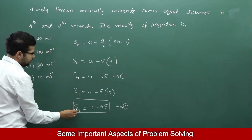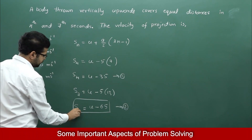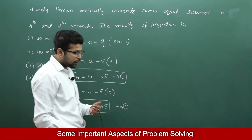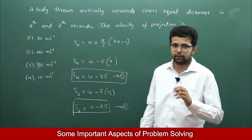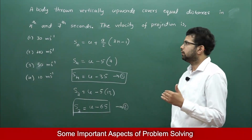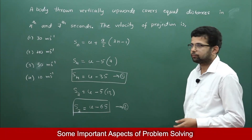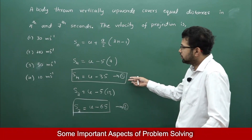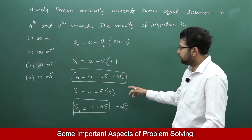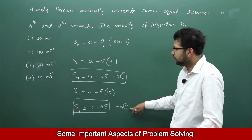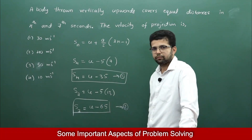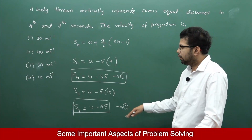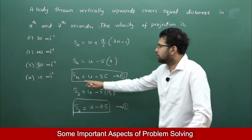Now, looking at these two equations for S4 and S7, we are given that S4 = S7 — the distance in the 4th second equals the distance in the 7th second. But if you subtract equation 1 from 2, u gets cancelled. If you add them, one more unknown remains. So how can we solve this equation?